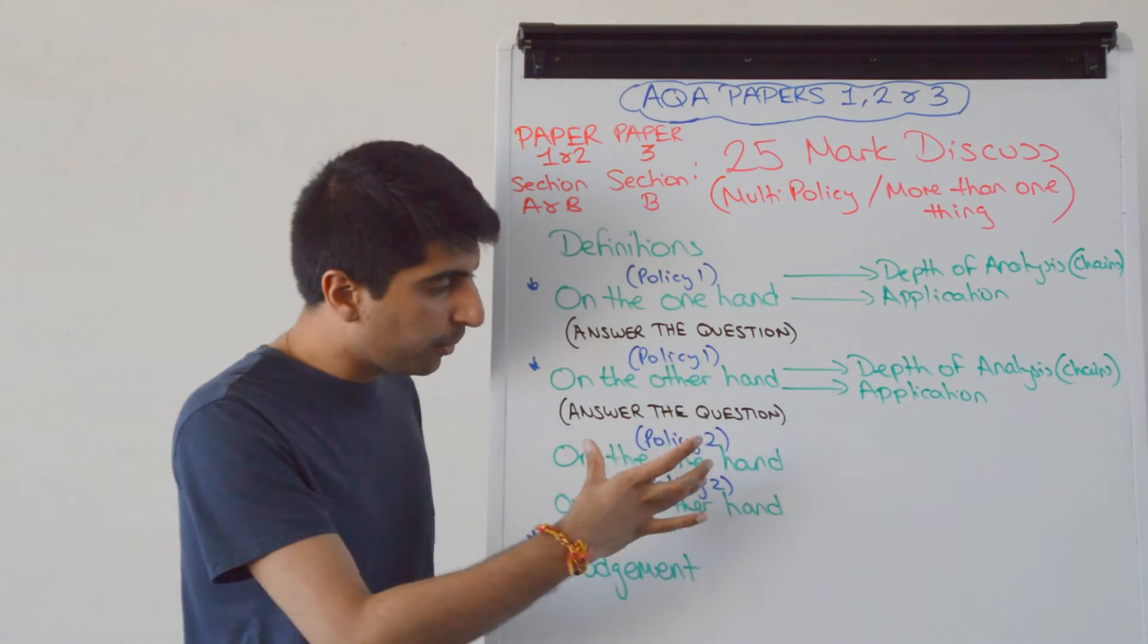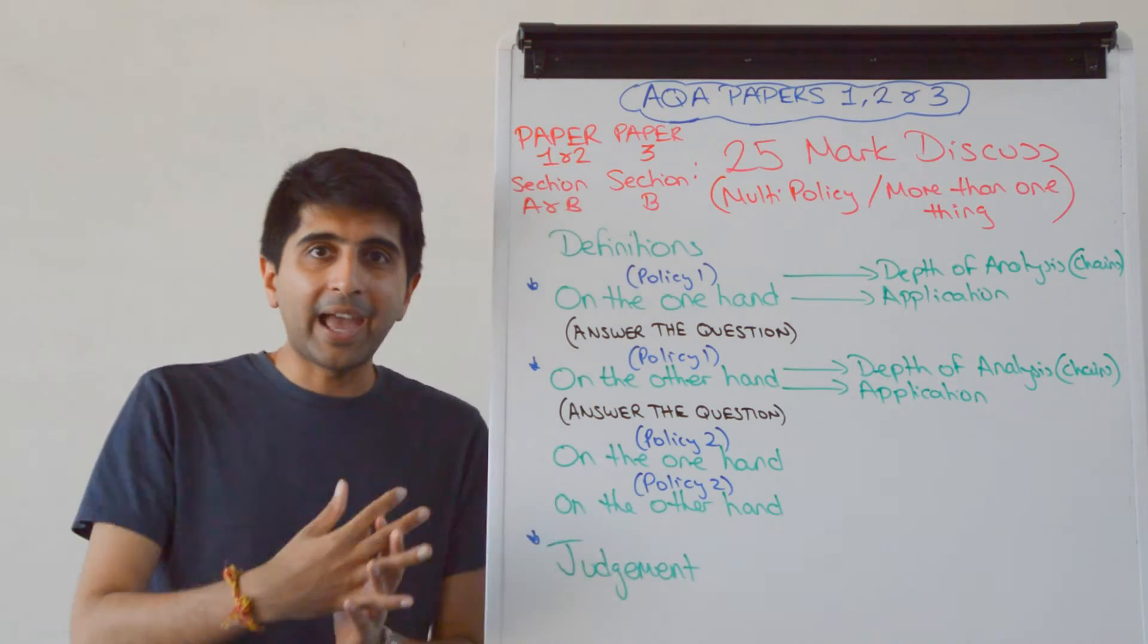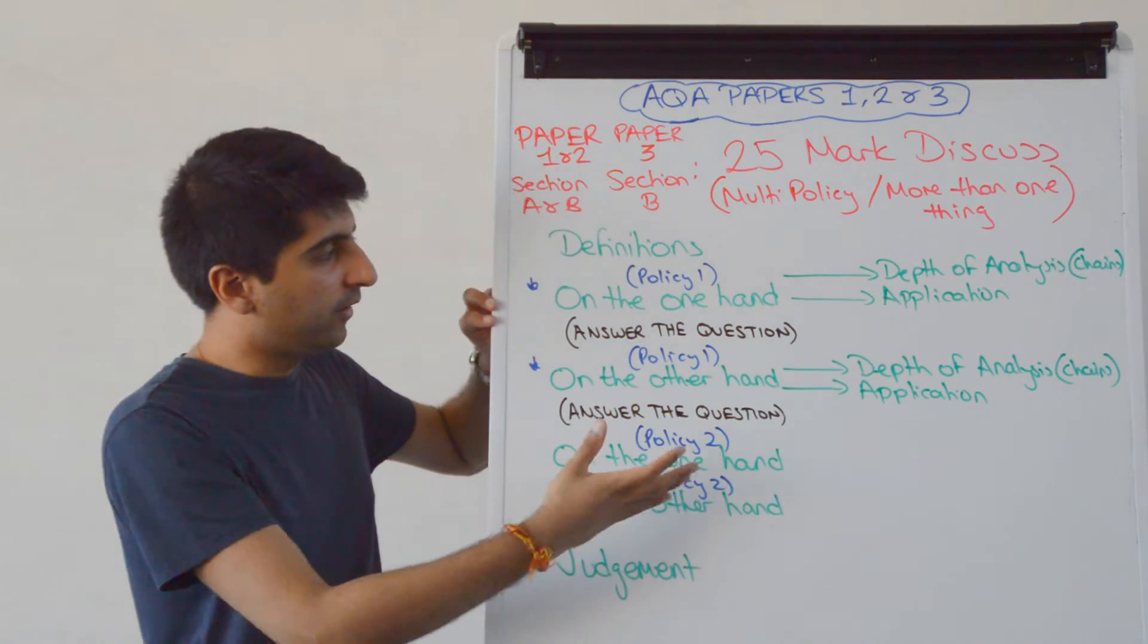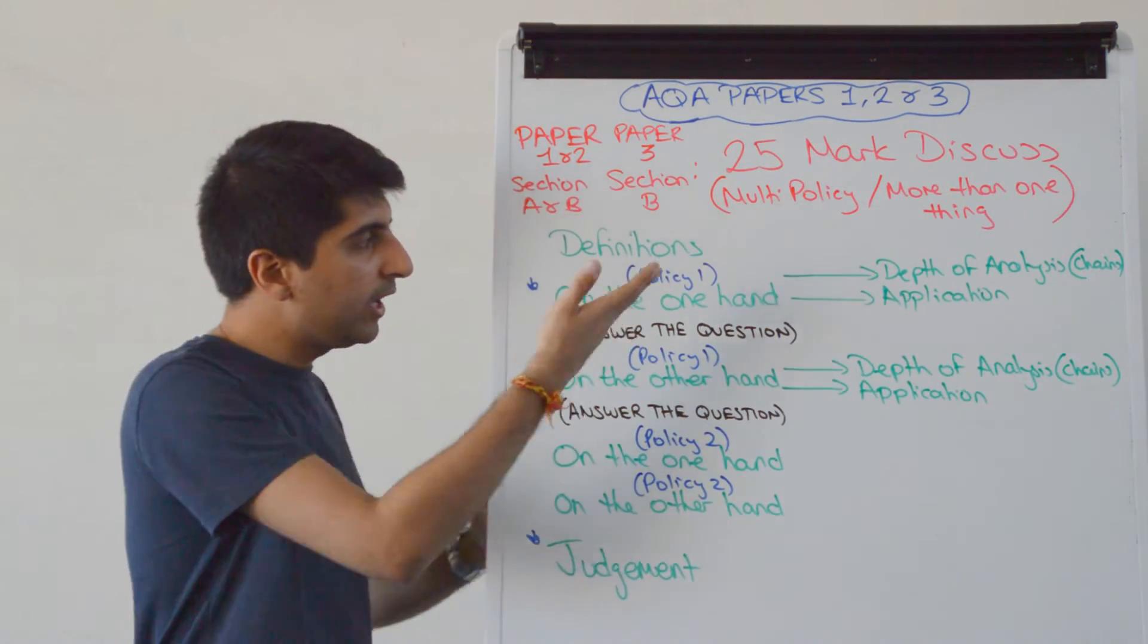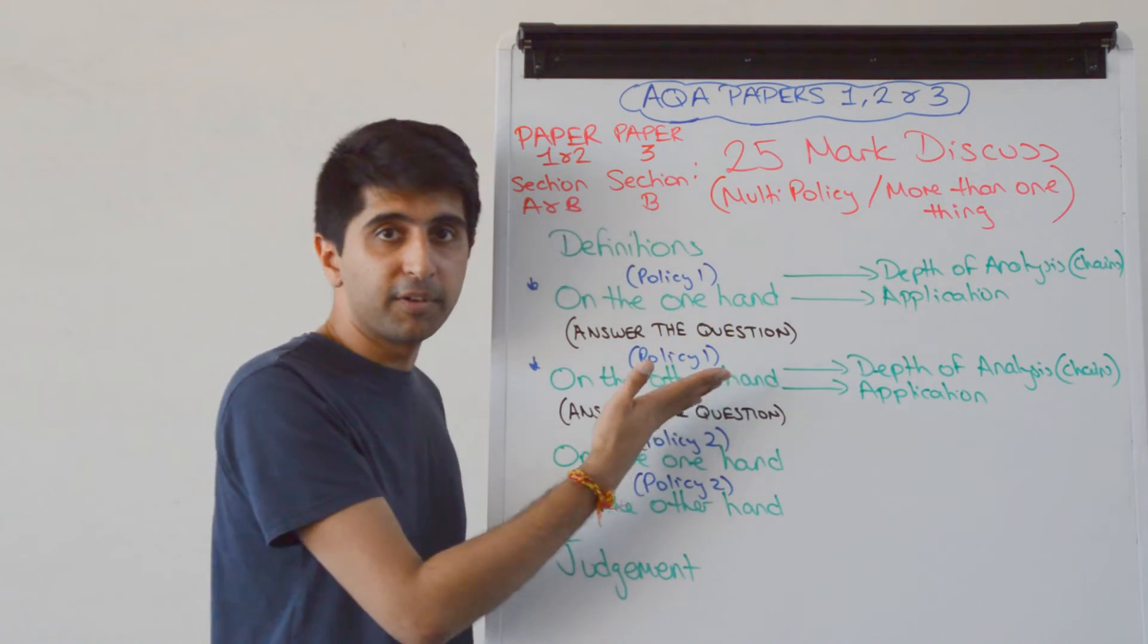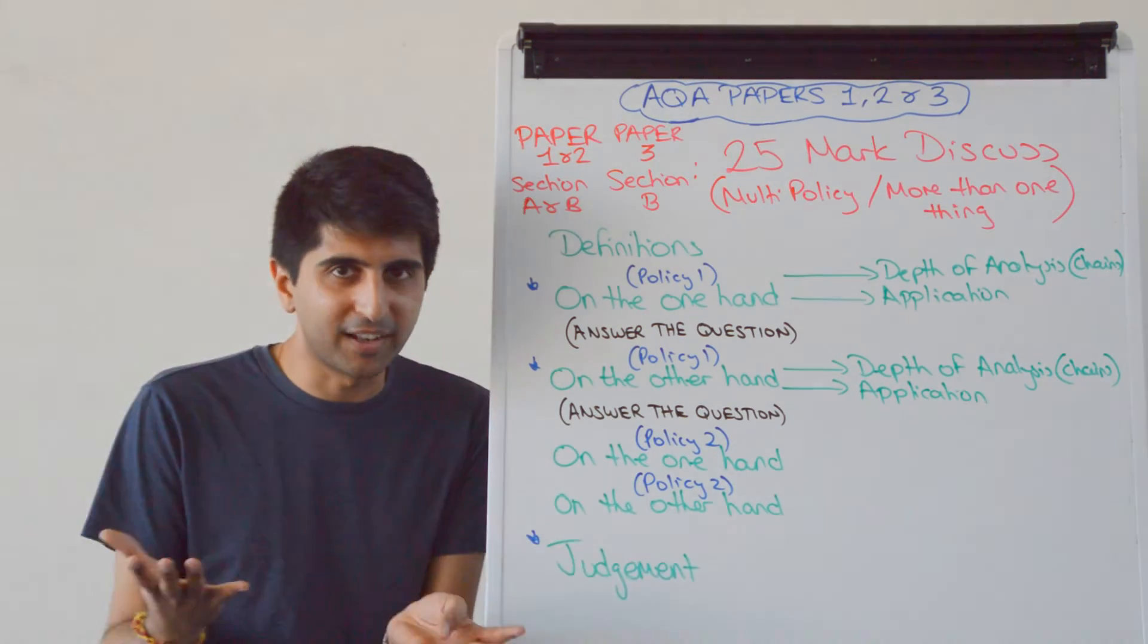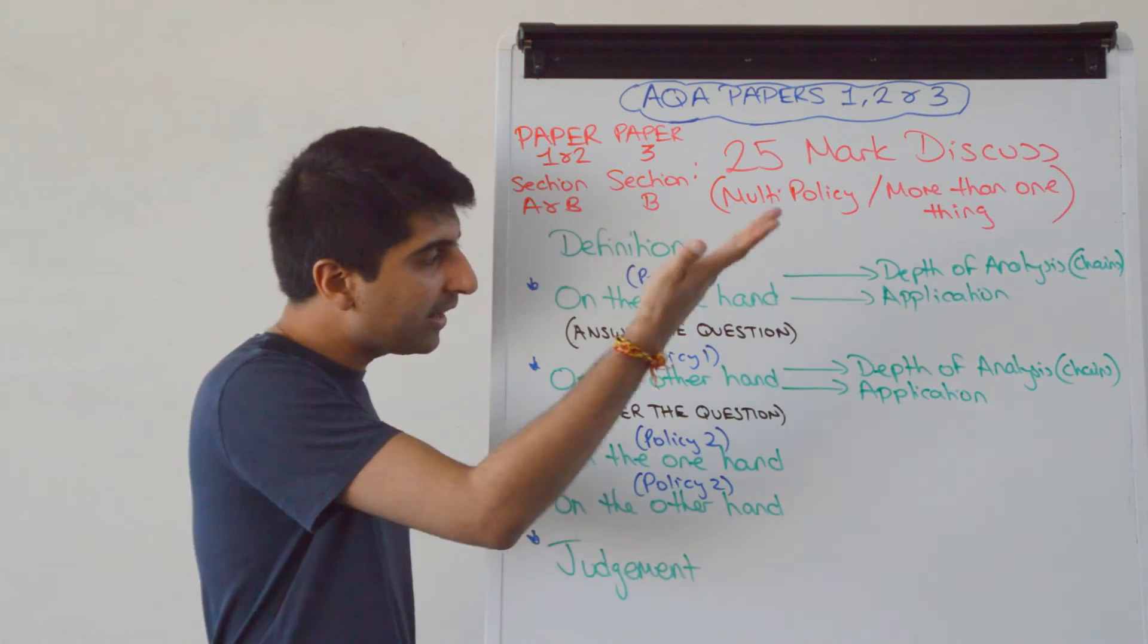So that's your policy two on the one hand. Still to answer the question, of course, you then say, right, on the other hand, here's a problem with this policy, your second policy. Exactly the same way as before, you need to do depth of analysis and application. But you see the structure here: here's one policy, here's a problem; here's a second policy, maybe that can overcome the problem with the first, but here's a problem with that. And you do that again if there are three policies you need to talk about, or if there are four policies—that would be a wild, difficult question if there are four policies. But that's the basic structure.